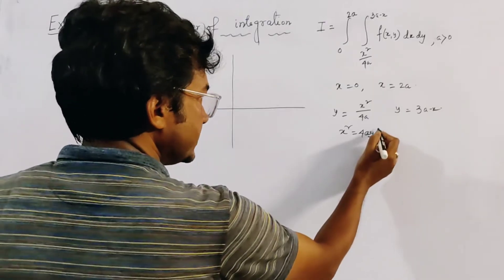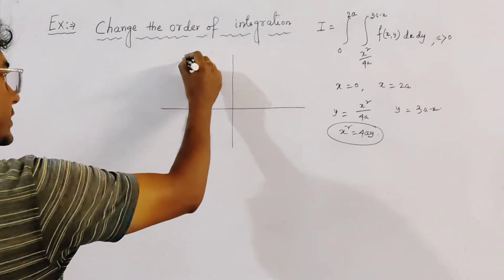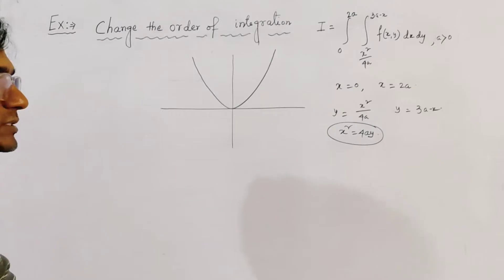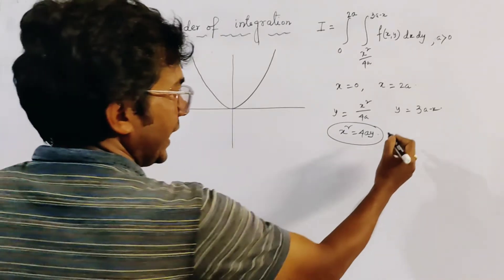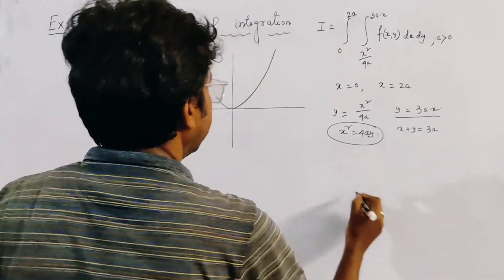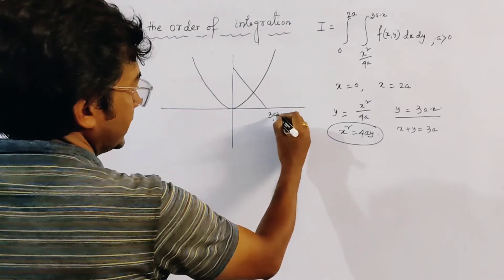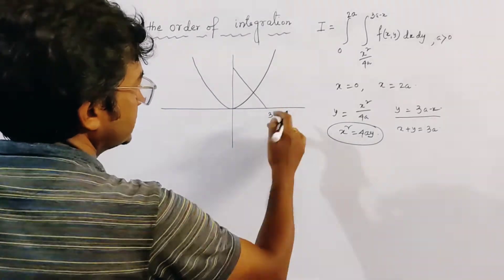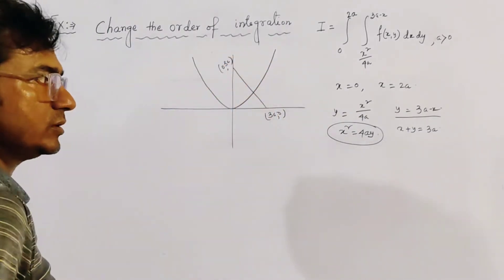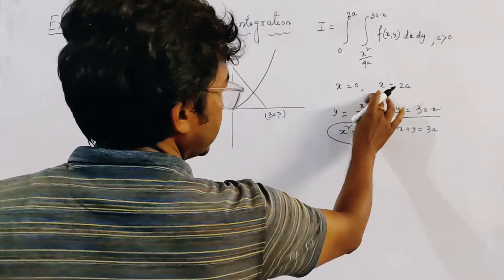This is a parabola with vertex (0, 0) and branch on the upper side. The straight line x plus y equal to 3a passes through (3a, 0) and (0, 3a). The other two boundaries are x equal to 0, which is the y-axis, and x equal to 2a.